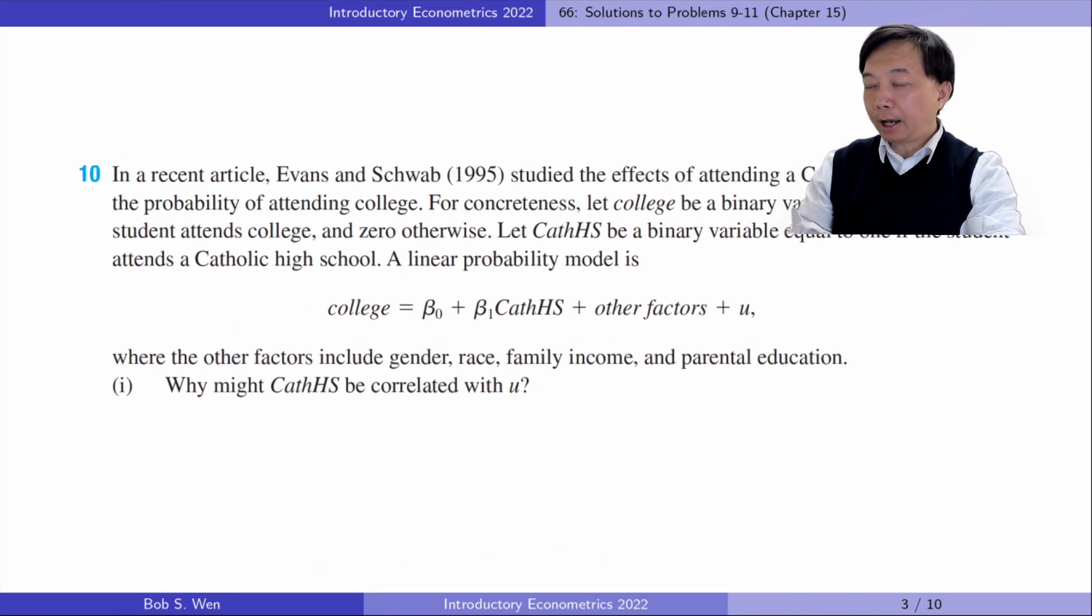Let's solve problem 10. It's about the effect of attending a Catholic high school on the probability of attending college. For concreteness, let college be a binary variable equal to unity if a student attends college and zero otherwise. Let CASHS be a binary variable equal to 1 if the student attends a Catholic high school. A linear probability model is as follows, where the other factors include gender, race, family income, and parental education.